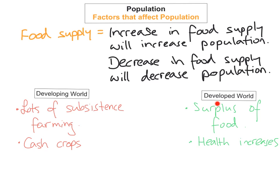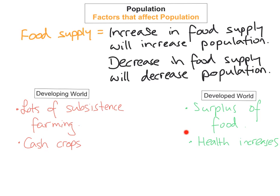However, in the developed world there is a surplus of food — more food than people — therefore there's an increase in food supply, which will increase the population. Also, they create a wide variety of food, which will increase health. Because they have a wide variety of different types of food, they have all the different nutrients that a person needs, and this will increase the population as people will live longer and the overall population will increase.